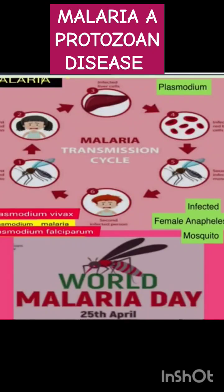Malaria is the disease caused by a tiny protozoan called Plasmodium. There are three species of Plasmodium: Plasmodium vivax, Plasmodium malariae, and Plasmodium falciparum, which cause malaria in human beings.